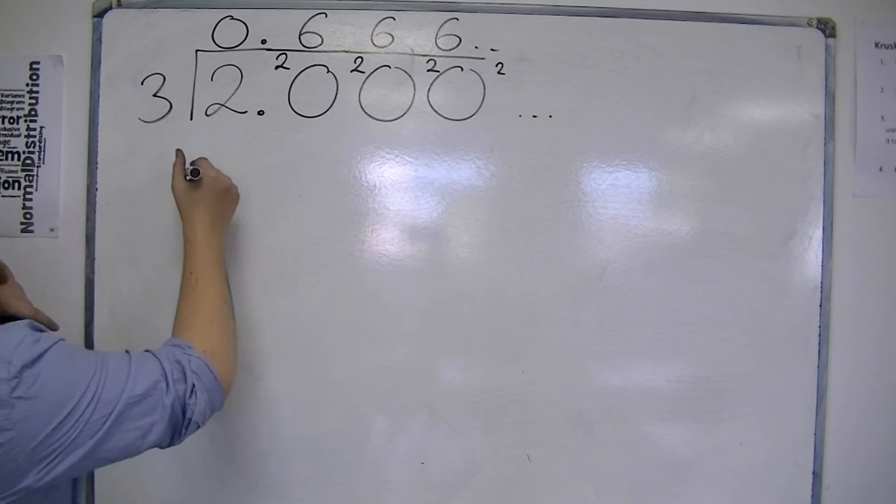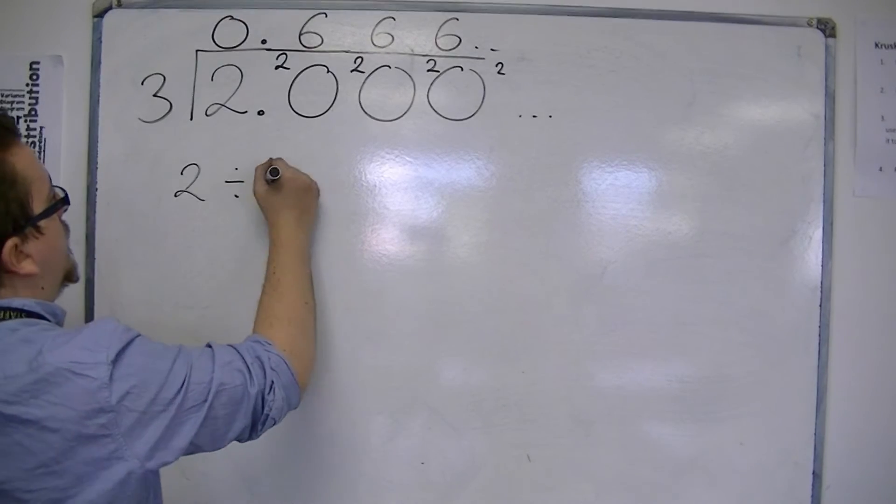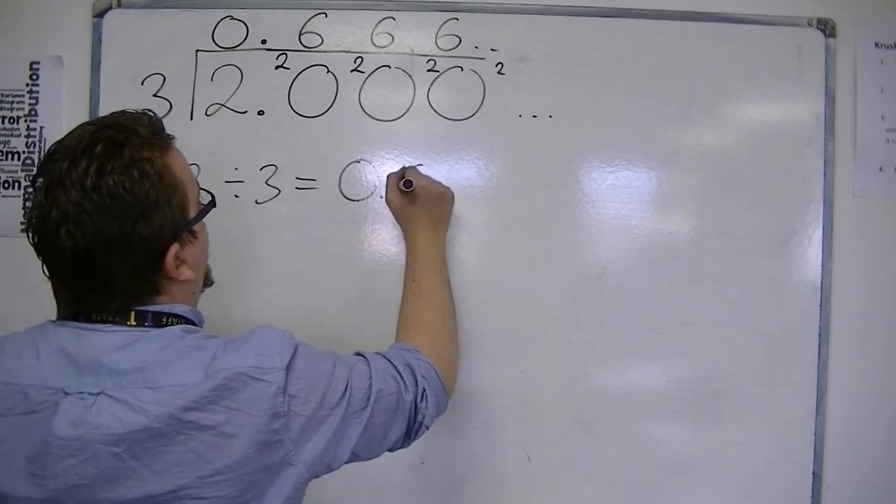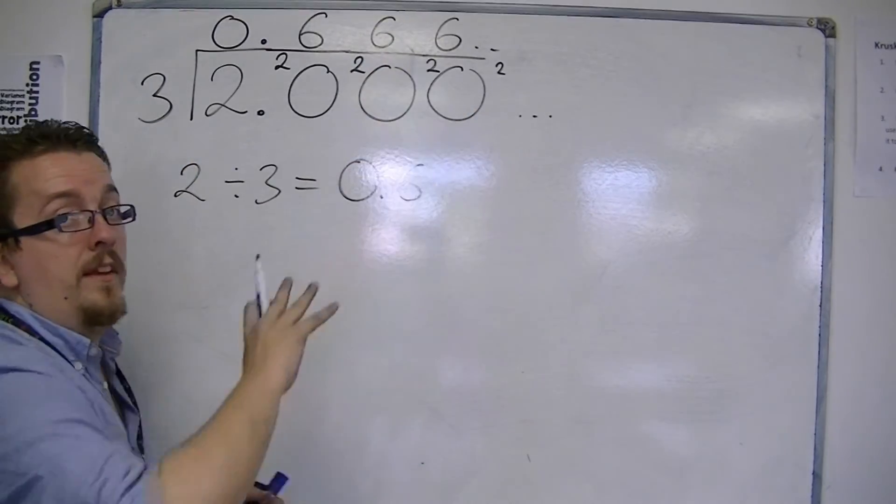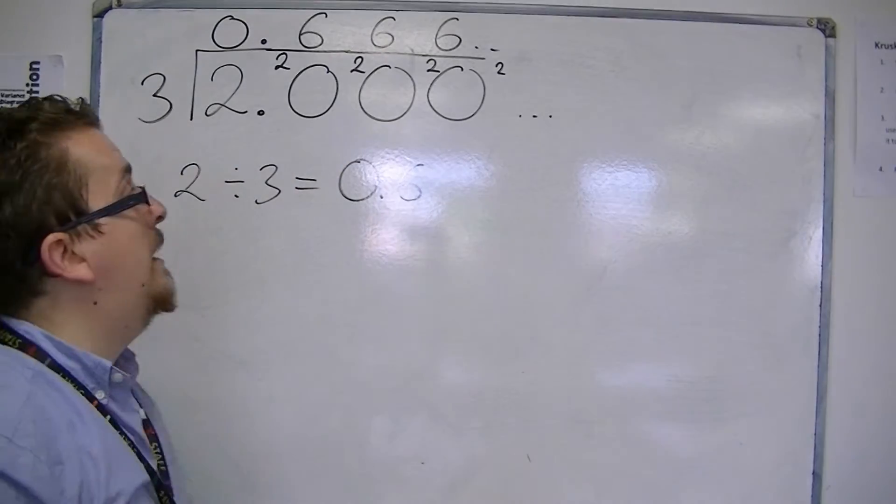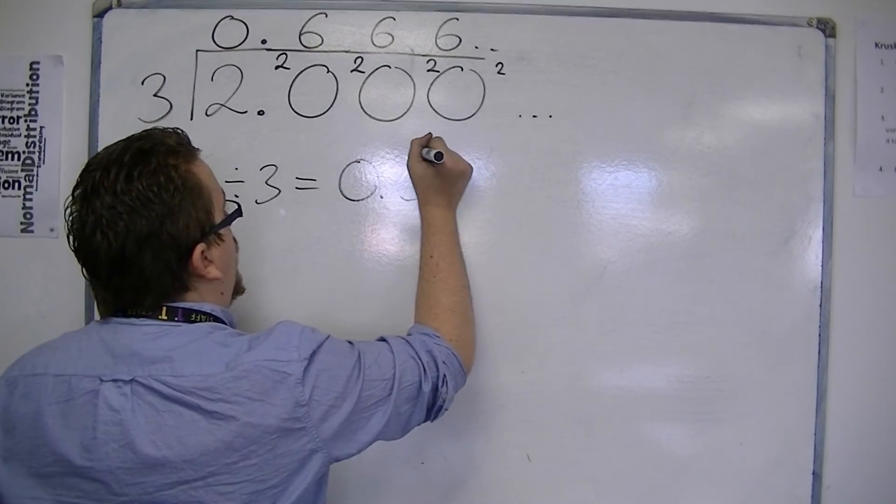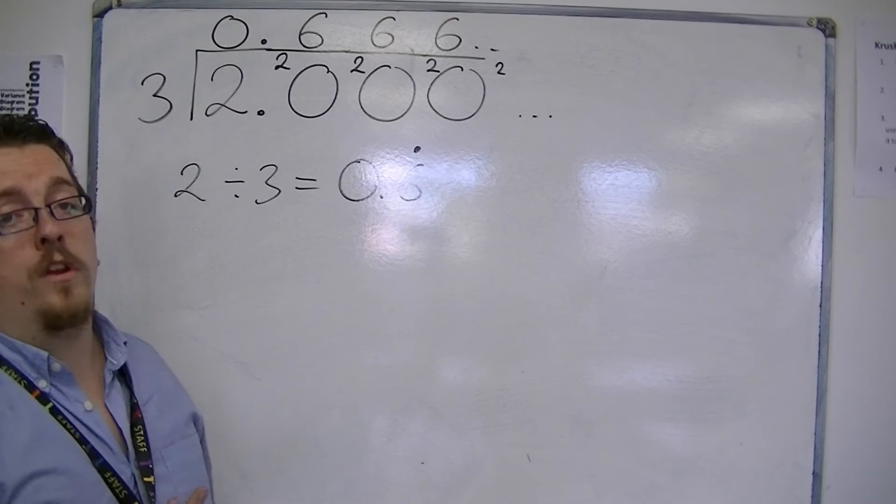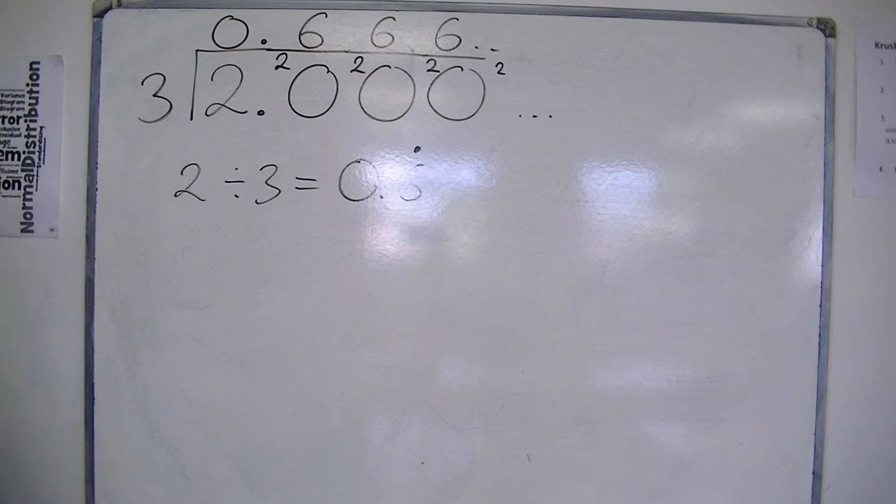So 2 divided by 3 is 0.6666666666666, and it goes on forever and ever, infinitely long. And we write that as 0.6 recurring. This is a recurring decimal.